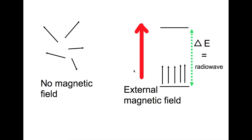NMR is a spectroscopy that uses radio waves and electromagnets to produce information about the connectivity of atoms in a molecule. It relies on the fact that some nuclei — for example hydrogen and carbon-13 atoms — have spin. NMR takes advantage of this. When there is no magnetic field, the spin of the nuclei is random, as can be seen in this picture here.